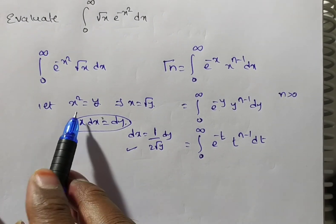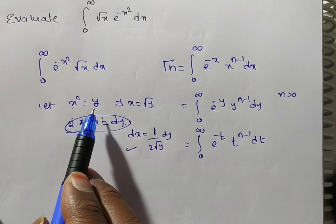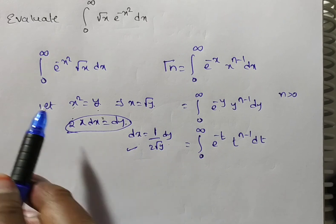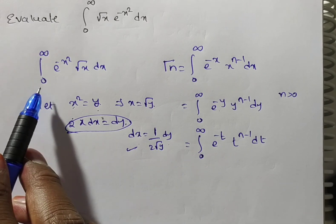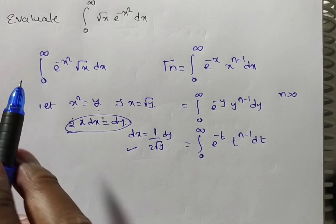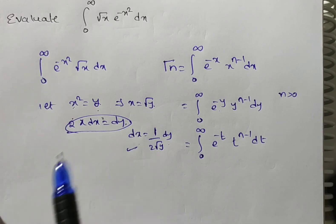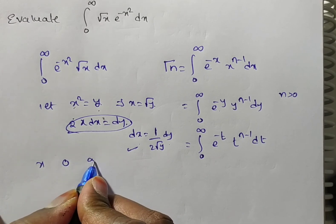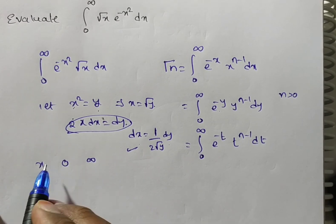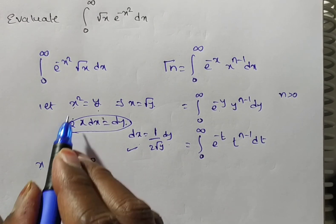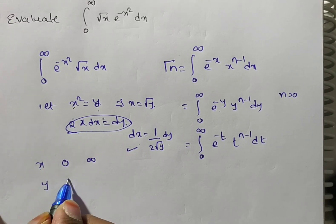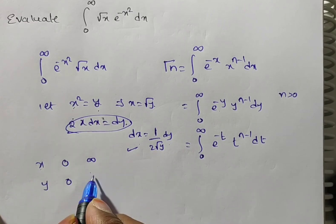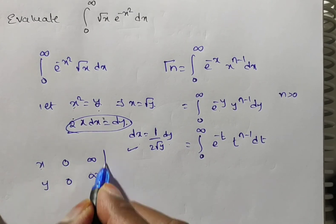Now we change x and dx in terms of y. We also have to change the limits of x in terms of y. The x limits are 0 and infinity. If x equals 0, then y equals 0. If x equals infinity, then y equals infinity.